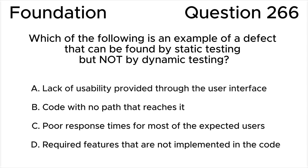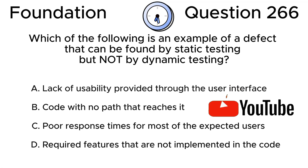ISTQB foundation level question 266: Which of the following is an example of a defect that can be found by static testing but not by dynamic testing? A) A lack of usability provided through the user interface. B) Code with no path that reaches it. C) Slow response times for most of the expected users. D) Required features that are not implemented in the code.